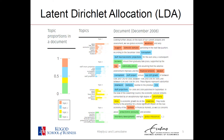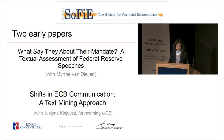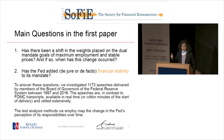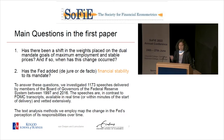My early work related to policy communication used these LDA topics. One paper, with Mirta van Dien—a PhD student at Erasmus University—was 'What Say They About Their Mandate,' a textual analysis of Federal Reserve speeches. We investigated roughly 1,100 speeches delivered by members of the Board of Governors between 1997 and 2016. Key questions were whether there had been a shift in weights placed on the dual mandate goals of maximum employment and stable prices, and whether the Fed had added financial stability to its mandate either de jure or de facto.